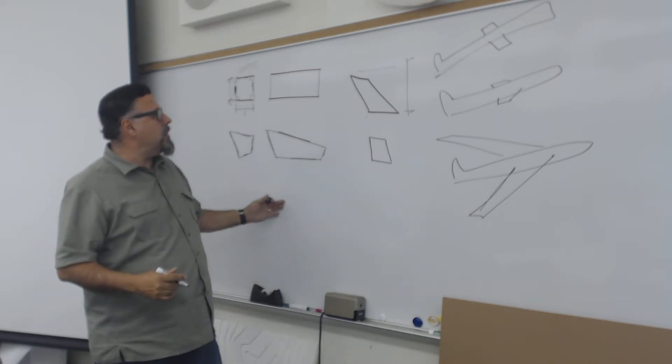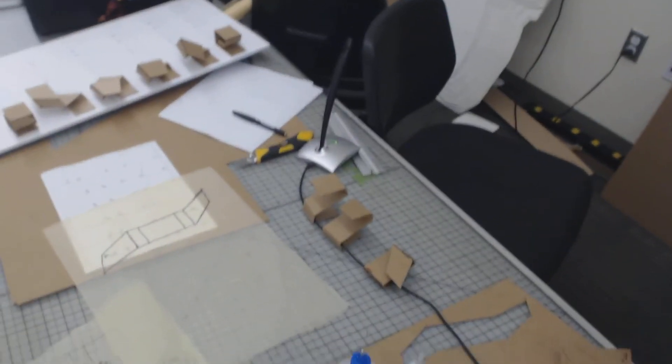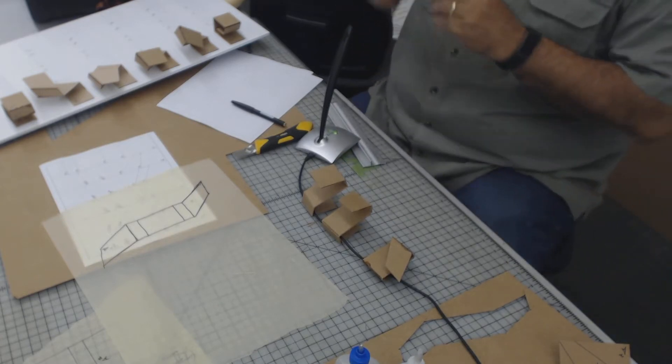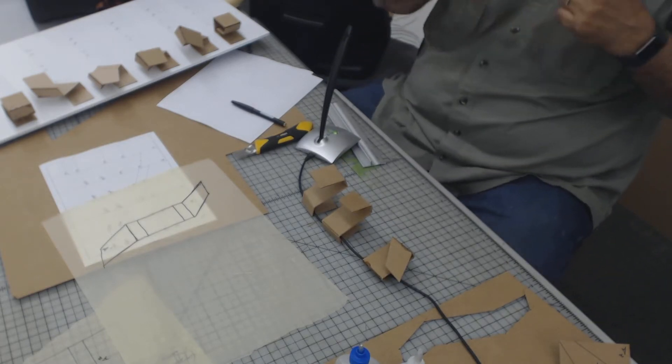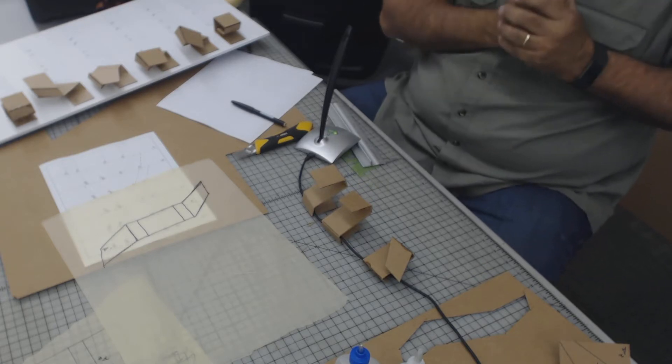So what I'm going to ask you guys to do right now is I'm going to ask you to take these goodies back and try to create something that is a little more dynamic than what you've got, okay? Applying the lessons of the elongation, the tapering, and the use of acute and obtuse angles.